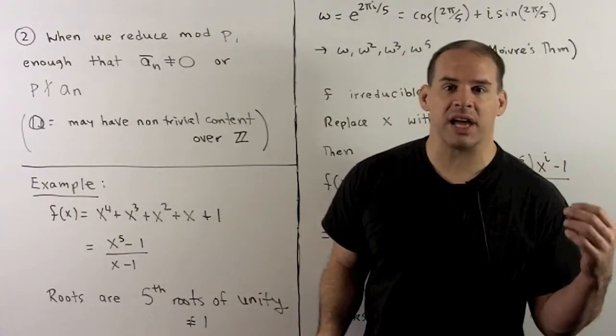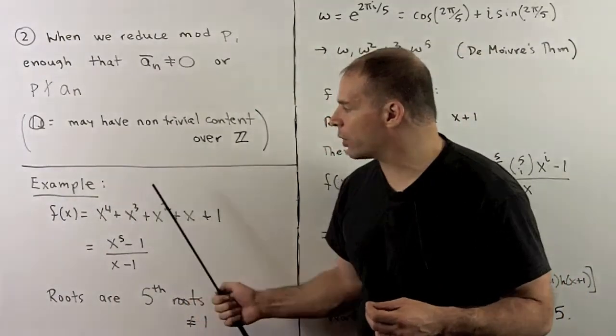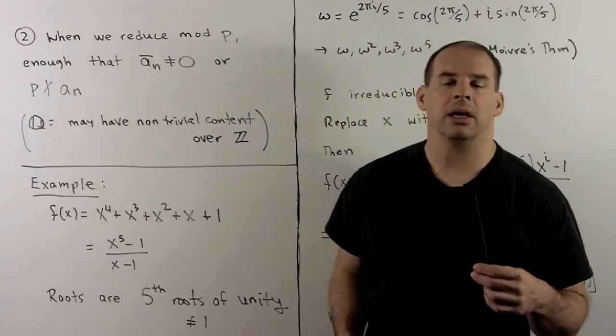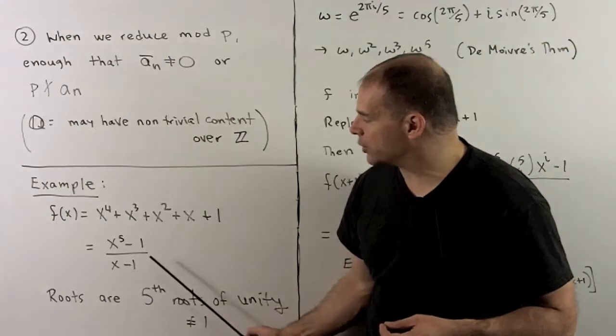For a non-trivial example of Eisenstein's criterion, let's try f(x) = x⁴ + x³ + x² + x + 1. Now, we can rewrite this as (x⁵ - 1)/(x - 1).